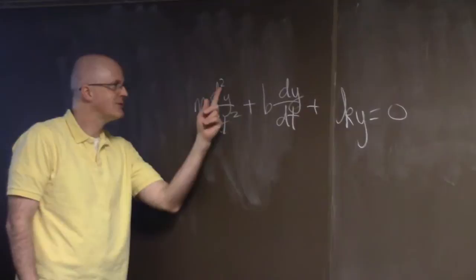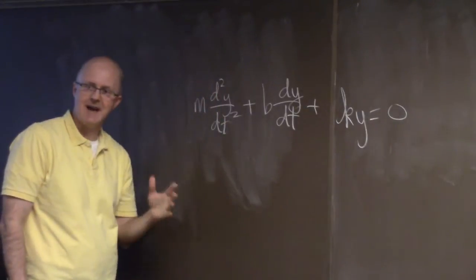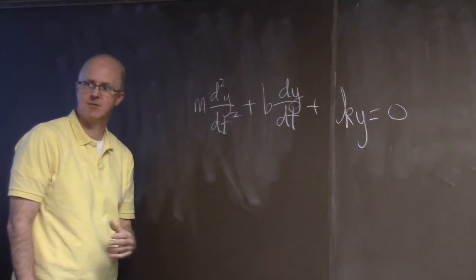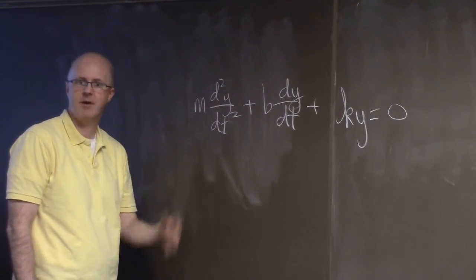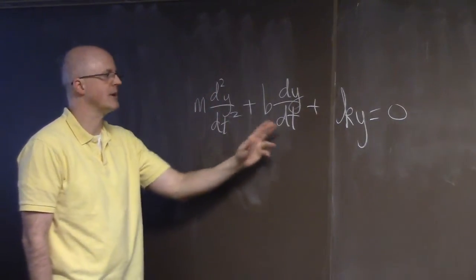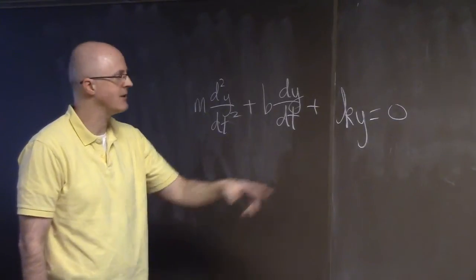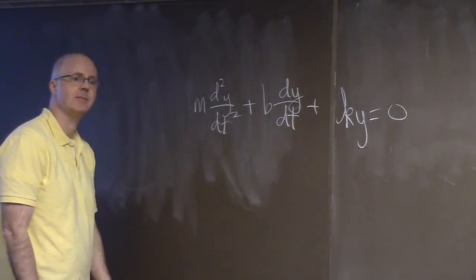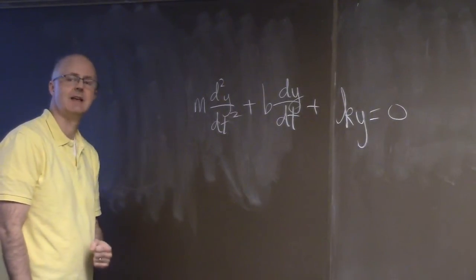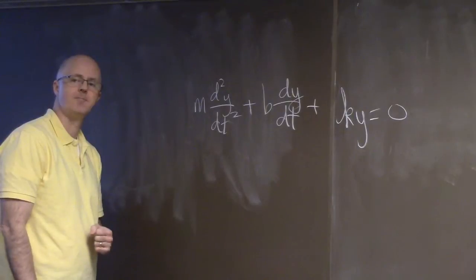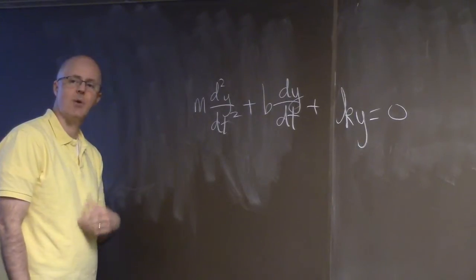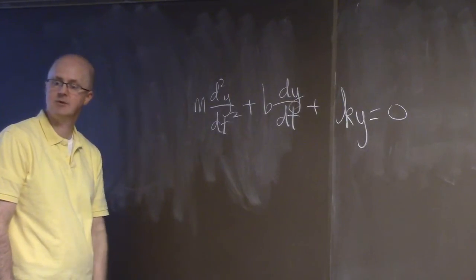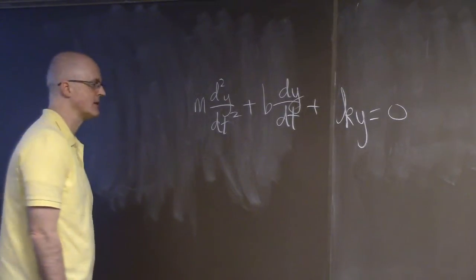That's a linearity property about this kind of differential equation. This is a linear differential equation because all the functions and their derivatives appear to the first power. Even though you've got a second derivative, you're not squaring the second derivative, you're not cubing anything. This is a linear equation, and because of that, the sum of any two solutions is going to be a solution.